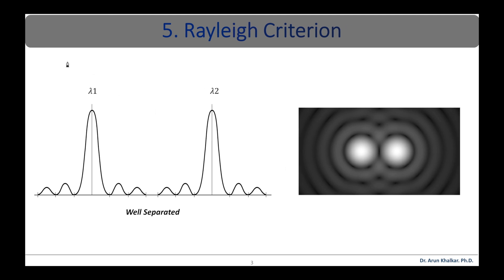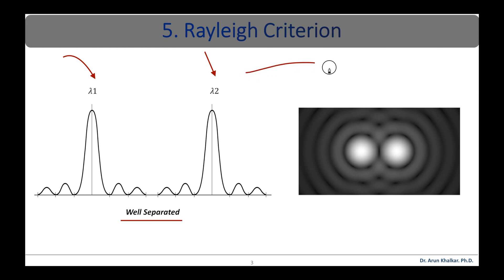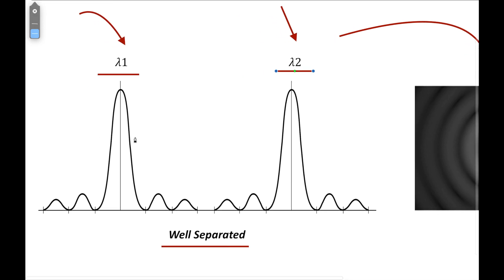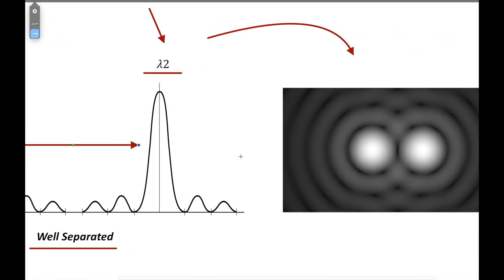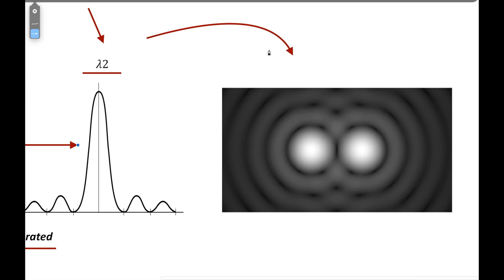Let us consider two wavelengths where the difference in wavelengths is small and they are close to each other, as shown in this figure. The resultant intensity curve is shown in this figure. They are said to be well separated — the first waveform with wavelength lambda 1 and the second with wavelength lambda 2 — with no overlapping between them. The corresponding intensity distribution pattern is shown here.